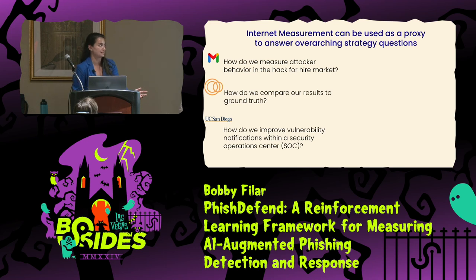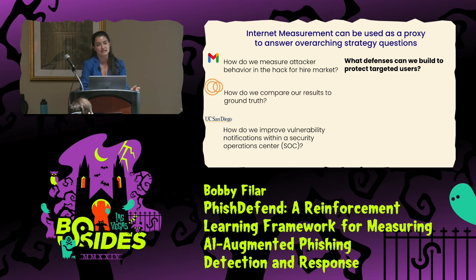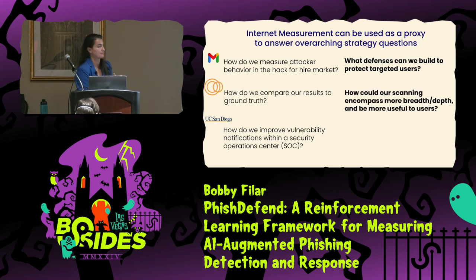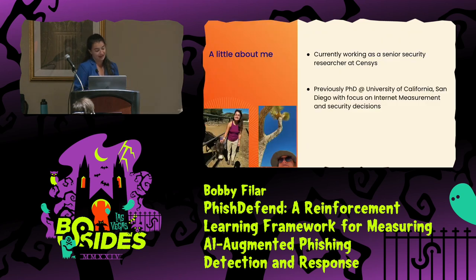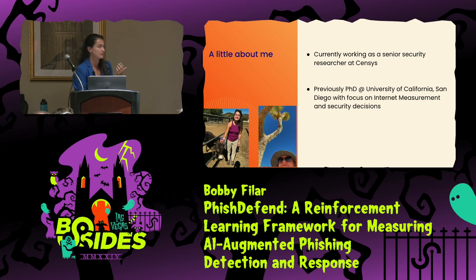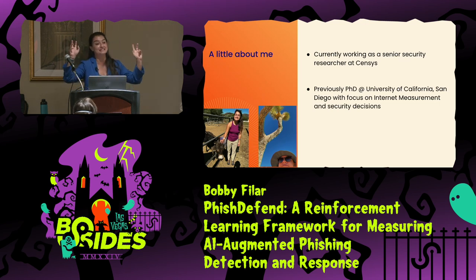When I say how do we measure attacker behavior in the hack-for-hire market, I'm actually thinking: what defenses can we build in email to better protect targeted users? When I think about comparing results to ground truth, I'm really asking how could our scanning encompass more breadth and depth to be more useful to users? And when I'm thinking about improving vulnerability notifications, it's really about how do we reduce the attack surface of an IT organization by removing vulnerabilities. My name is Ariana. I currently work as a senior security researcher at Census, and previously I did my PhD at UCSD where my thesis was focused on internet measurement and security decisions. I chose these three projects because they're very different, to give you a broad range of what internet measurement can actually be.